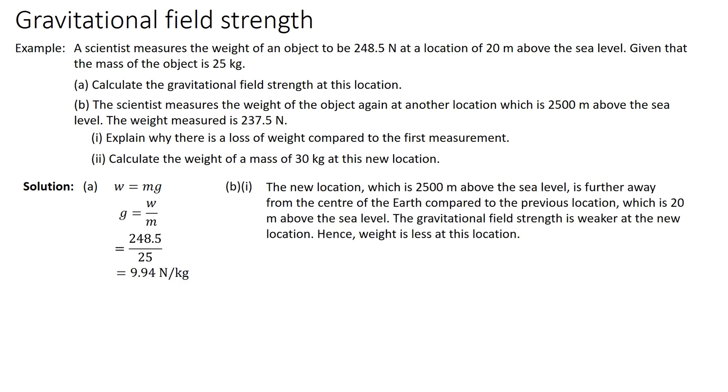For part b(i), the new location which is 2500 meters above the sea level is further away from the center of the Earth compared to the previous location which is 20 meters above the sea level. The gravitational field strength is weaker at the new location, hence weight is less at this location.